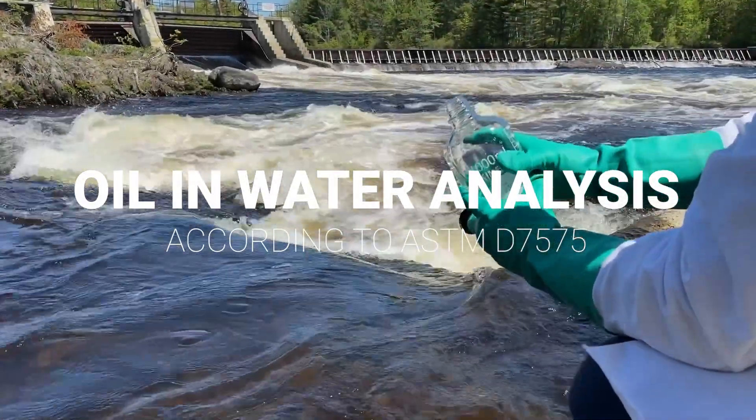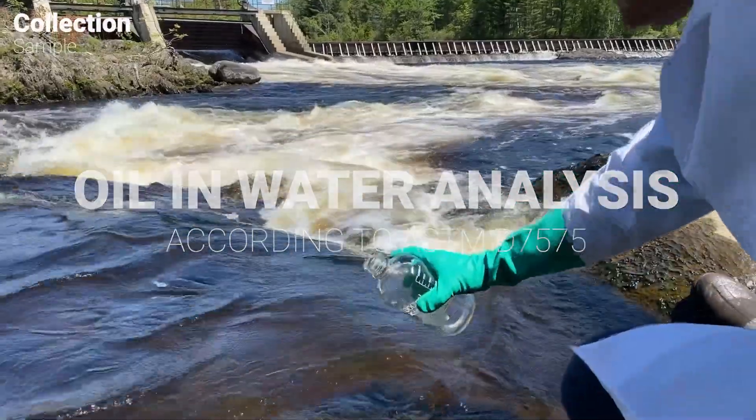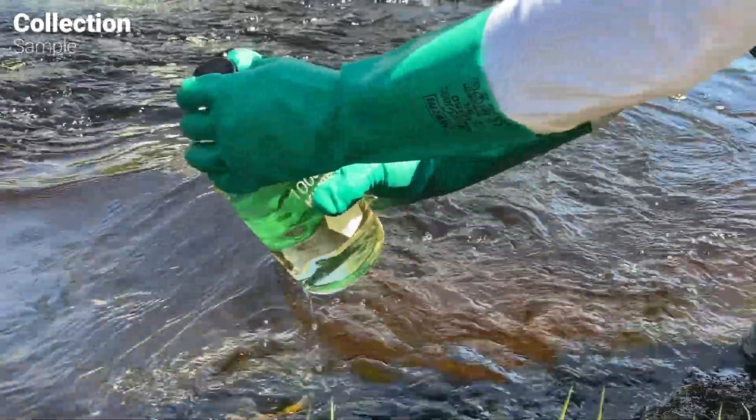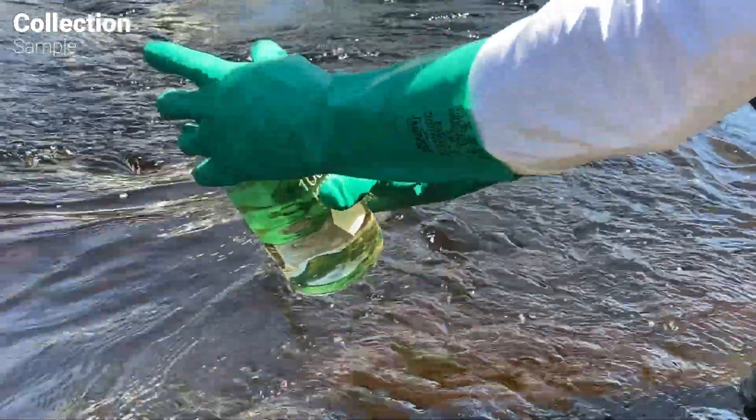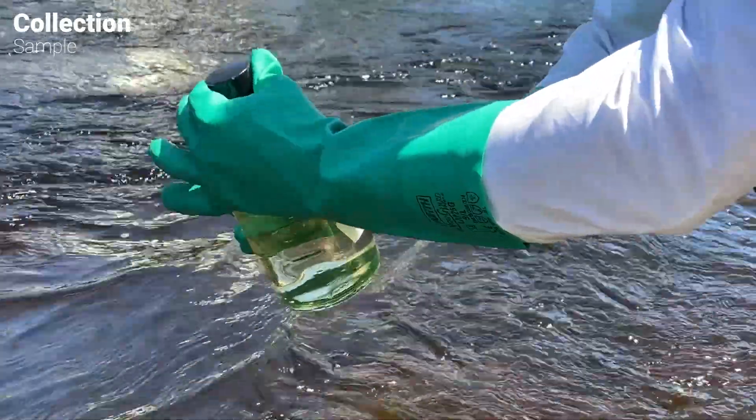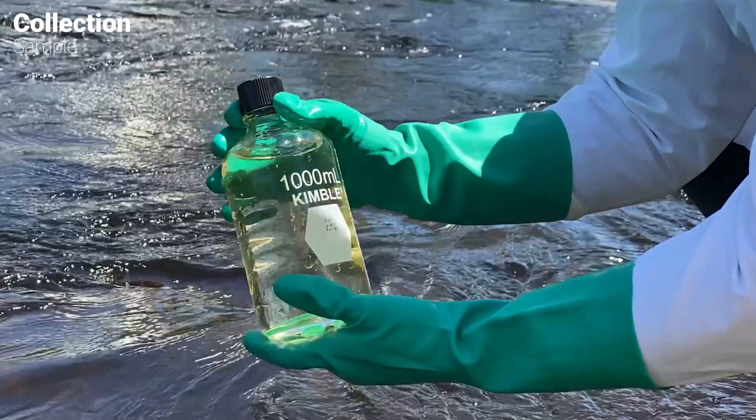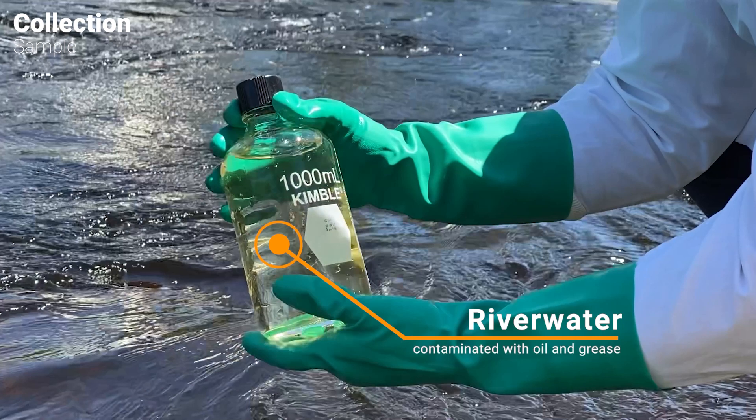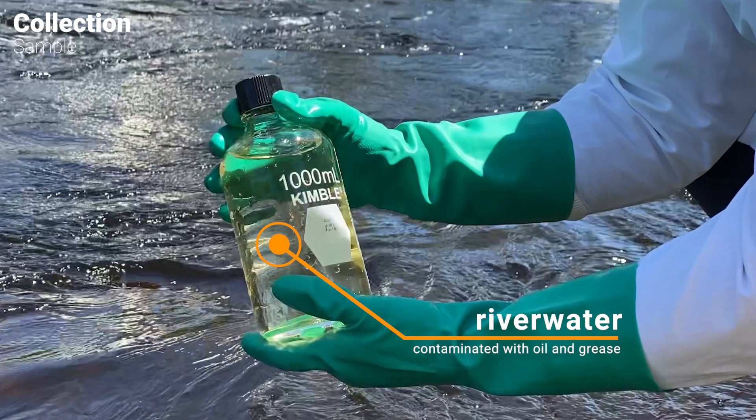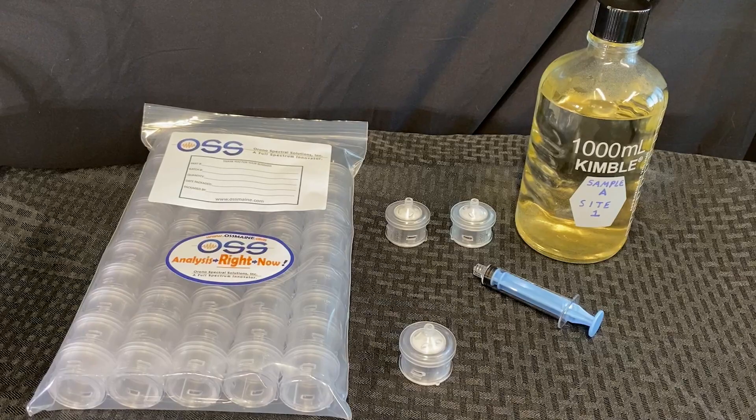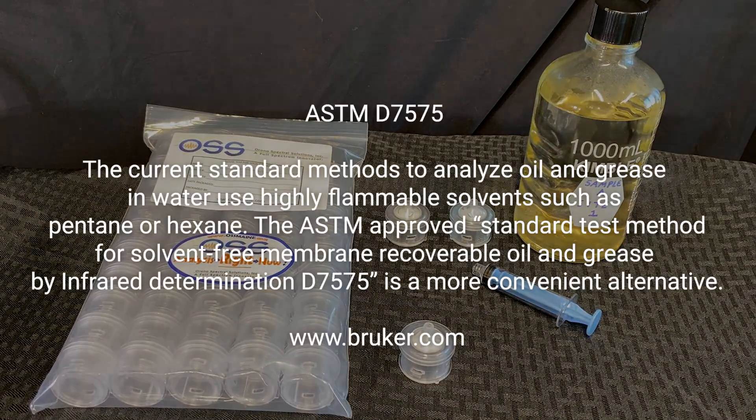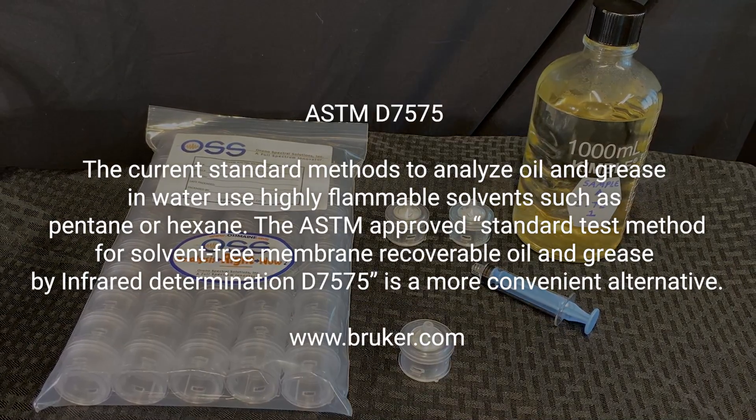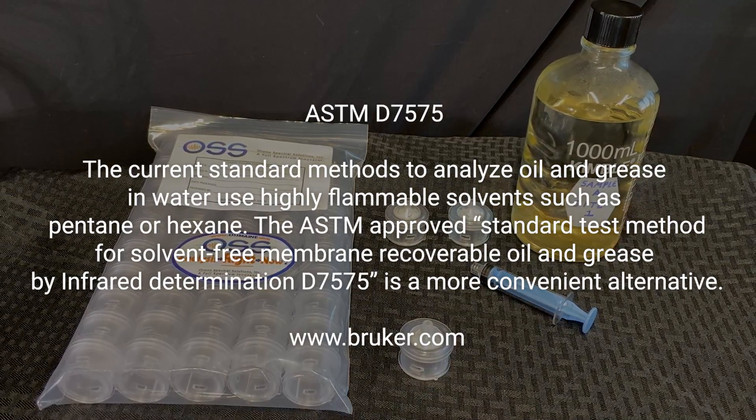Environmental pollution, especially regarding water, concerns us all. In this video we want to shed some light on the pollution of water by hydrocarbons like oil and grease. For this we obtained a water sample from a river that receives various wastewater discharges. To be more exact, we will be using the ASTM D7575 to determine and quantify the river's contamination.